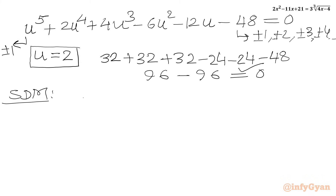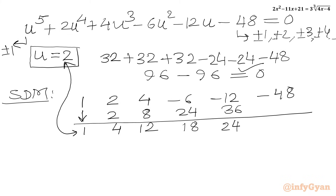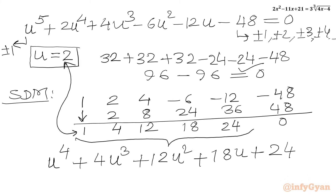Writing the coefficients of the degree 5 equation: 1, 2, 4, minus 6, minus 12, minus 48. Performing synthetic division with u equal to 2 gives: 1, 4, 12, 18, 24, with remainder 0. So the resulting degree 4 equation is u⁴ plus 4u³ plus 12u² plus 18u plus 24 equal to 0.